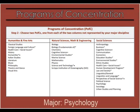Say for example your major is psychology, which falls in the social sciences discipline, and you decide to take six four-unit biology classes, at least three of which are upper division, to complete your natural science, math and engineering program of concentration. Similarly, you choose to take six four-unit visual arts classes to complete your humanities and fine arts program of concentration.